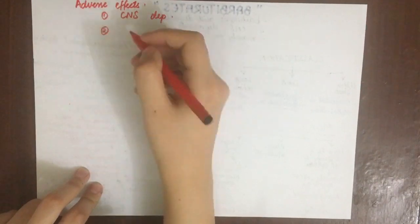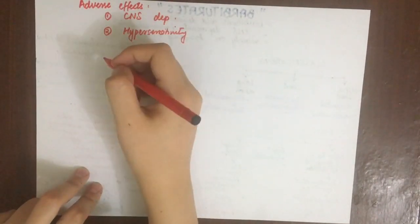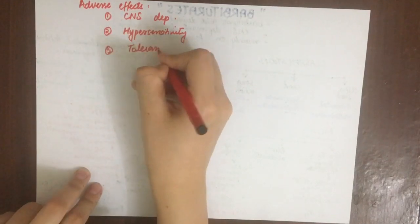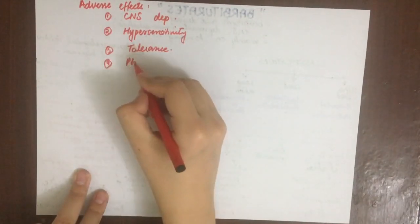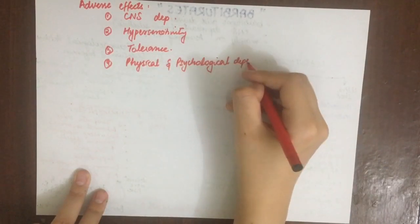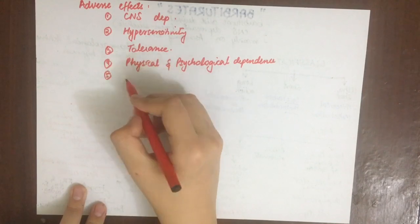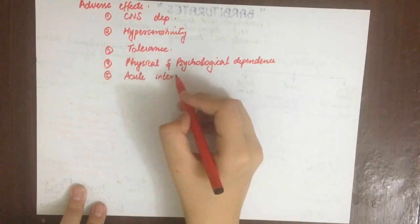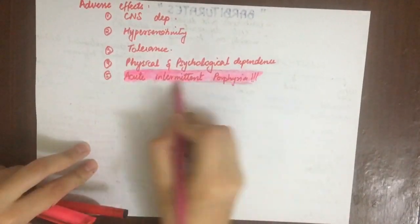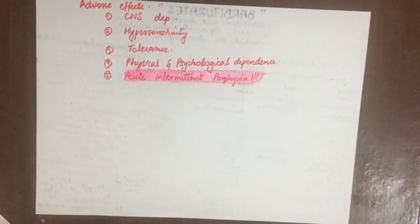The adverse effects of barbiturates include common CNS depressive effects, which are extensions of the pharmacological effects — such as drowsiness, confusion, headache, ataxia, hypotension, and respiratory depression. Hypersensitivity reactions such as skin rashes and itching are common. Tolerance can develop on repeated use, and prolonged use can cause physical and psychological dependence.